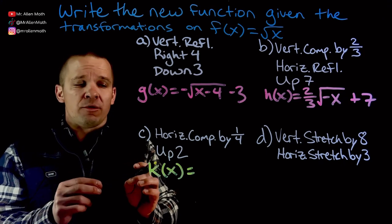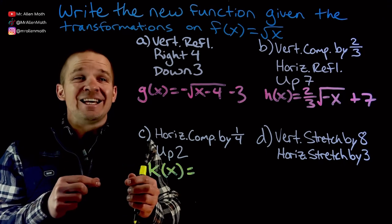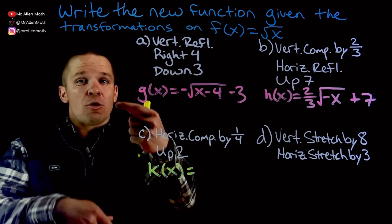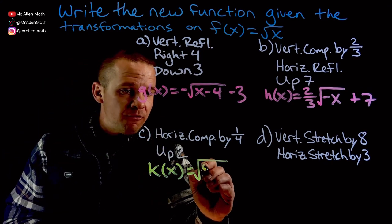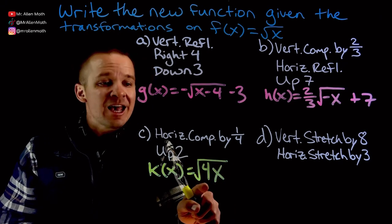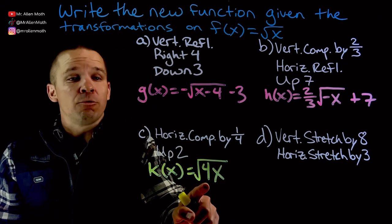So if it's a horizontal compression by 1 fourth, the number you're actually going to see on the inside of the function is going to be reciprocal of that, which is 4. So I'm at the square root of 4x, okay? That is a horizontal compression by 1 fourth.